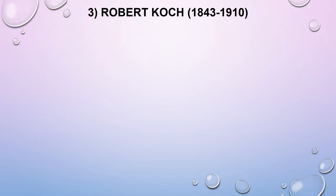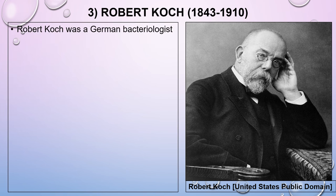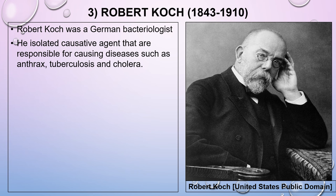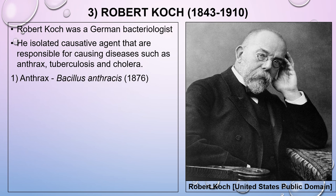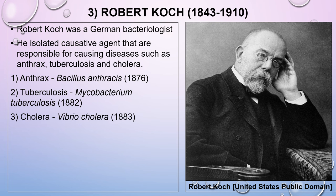Let's see details about Robert Koch, 1843 to 1910. Robert Koch was a German bacteriologist. He isolated the causative agents responsible for diseases such as anthrax — Bacillus anthracis in 1876 — tuberculosis — Mycobacterium tuberculosis in 1882 — and cholera — Vibrio cholerae in 1883.